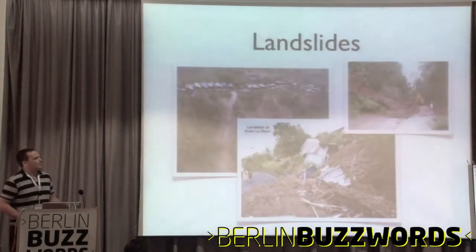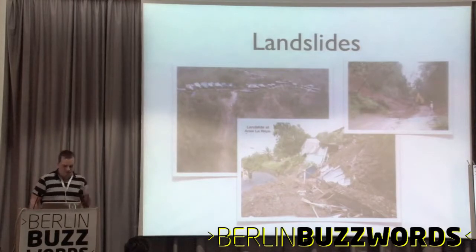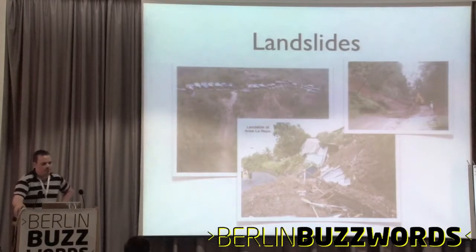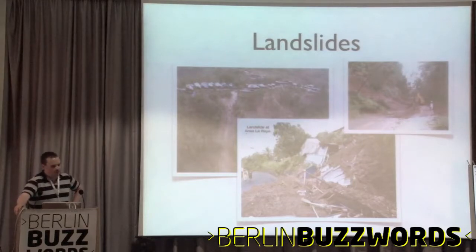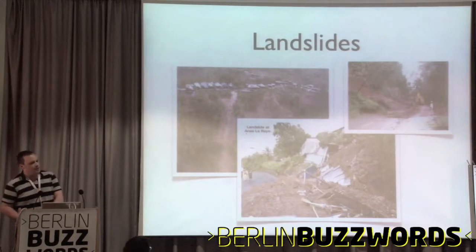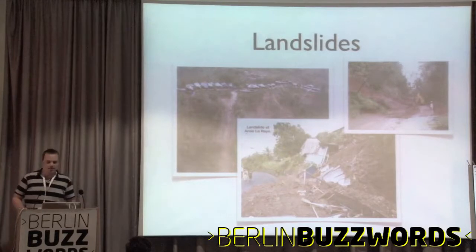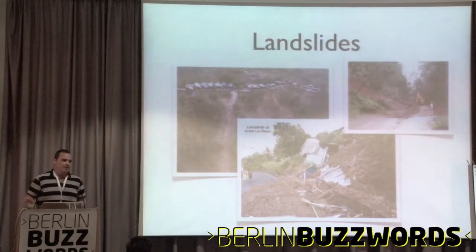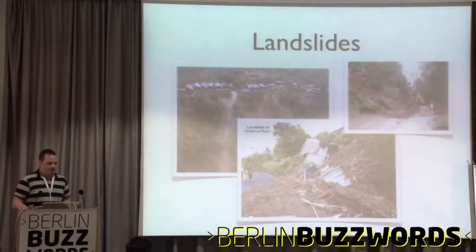So, landslides. There are the direct problems of loss of human life, loss of homes and livelihood, and then the less obvious problems due to clear-up costs, repairs to roads and critical infrastructure, and the cost of disruption whilst your critical infrastructure is unavailable. Roads in particular are very important because people like the emergency services need to get around, and given that landslides are usually caused by a trigger event such as a tropical storm, people really need to get to hospital or fix power stations.